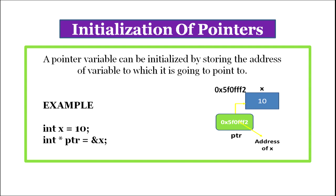Initialization of pointers: A pointer variable can be initialized by storing the address of the variable to which it is going to point. For example, given 'int x = 10', two bytes of memory are allocated to x and value 10 is stored there. The next statement 'int* ptr = &x' declares PTR as a pointer of type integer and stores the address of x in PTR. So PTR is a pointer variable holding an address rather than a value.